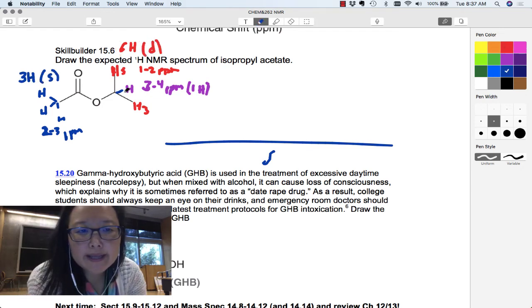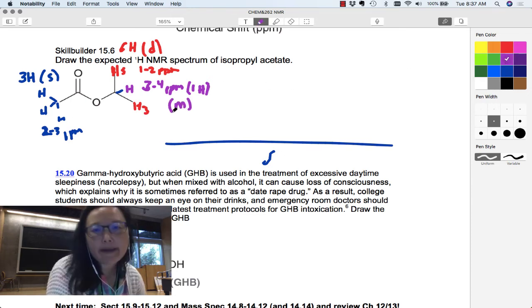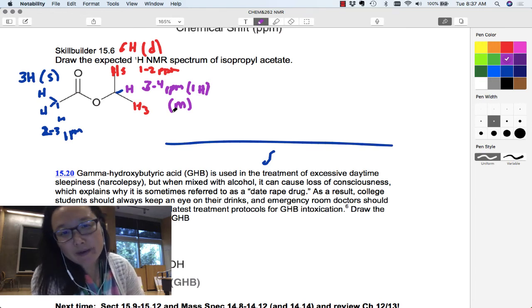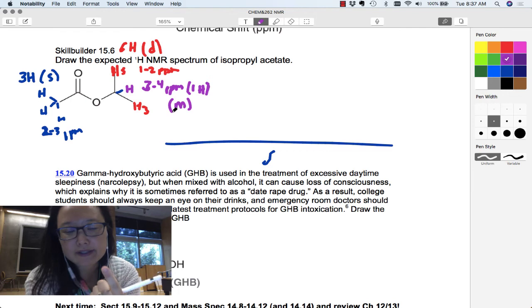And then I've got this 1H split by its six neighbors. 6 plus 1 is 7. I'm just going to call that a multiplet. So now I have all the information I need going through those four features: number of signals based on equivalency, chemical shift, integration, and splitting or multiplicity.